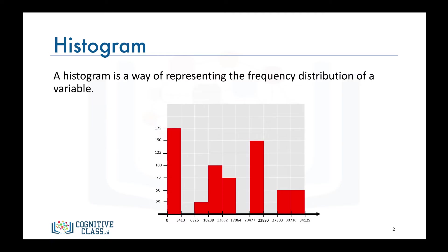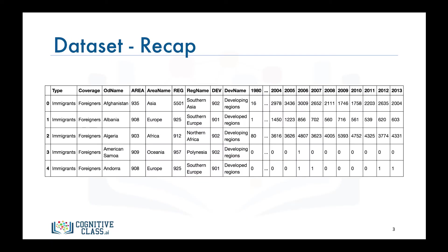So how do we create a histogram using matplotlib? Before we go over the code to do that, let's do a quick recap of our dataset. Recall that each row represents a country and contains metadata about the country, such as where it is located geographically and whether it is developing or developed.